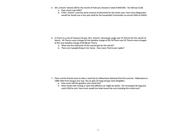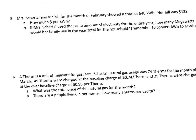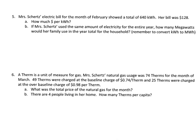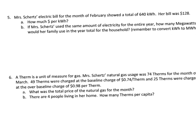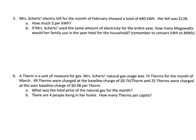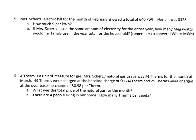All right, so now we're at number five. Mrs. Schertz's electric bill for the month of February showed a total of 640 kilowatt hours. Her bill was $128. It's actually really cheap for electricity, but it was February. So how much money per kilowatt hour in February? That's part A. So let's do that.